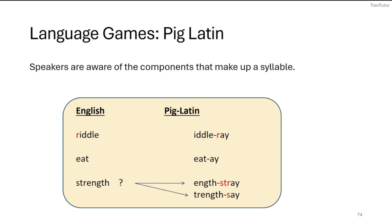Pig Latin is a little game that children play where they take words in English and transform them to create new sounds. For example, 'riddle' becomes 'idl-ray,' and 'eat' becomes 'eat-ay.' The general idea is: you take the beginning of the word — if it's a consonant — and you put it at the end and add an 'a' to it. In the case of 'riddle,' you take the R, put it at the end, and add an 'a' sound to get 'idl-ray.' In the case of 'eat,' there's no consonant at the beginning, so you just add 'a' — or in some versions 'yay' — to the end. The question is, what do kids do with a word like 'strength'? It's pretty systematic: children will always do 'enth-stray,' taking the STR at the beginning and moving it to the end, rather than just moving the first letter.